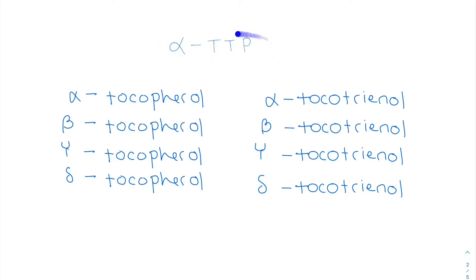So if we do have a mutation of the alpha-TTP, then even if we're getting enough vitamin E in our diet, we'll still show signs of deficiency because it's not able to get incorporated into the VLDL because this alpha-TTP is what does that.